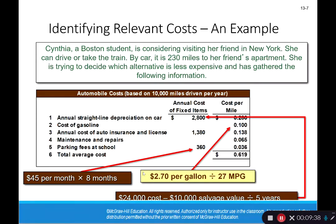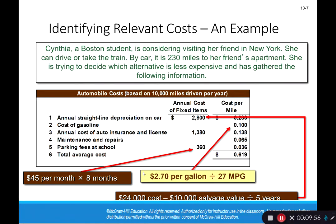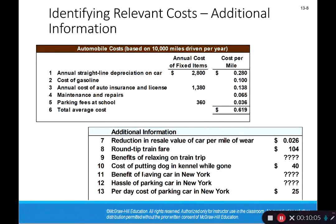But that 61.9 cents per mile may not be the true cost, because some of the information included is relevant and some isn't — some of it won't change whether she drives or takes the train. That's how we arrive at incorrect solutions. Some additional information is also given: a reduction in resale value per mile for wear and tear, round trip train fare, and the benefits of relaxing on the trip, which has question marks because it's a qualitative, not a quantitative factor.